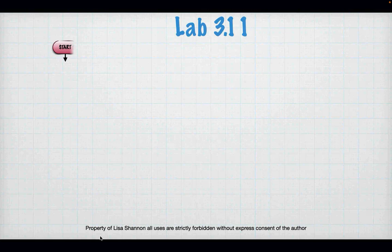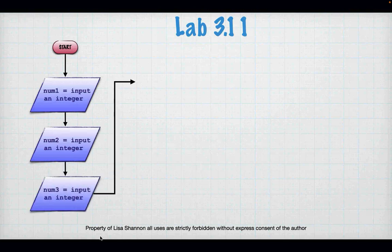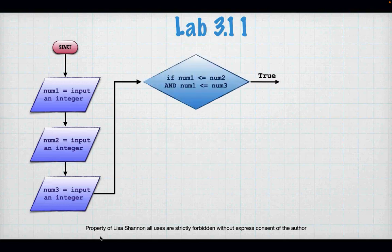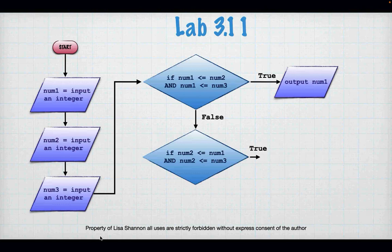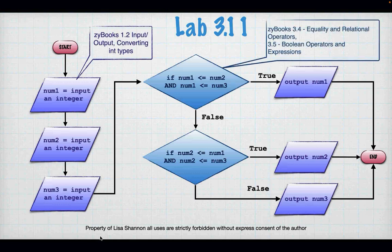If num1 is less than num2 AND num1 is less than or equal to num3, then num1 has to be the smallest number. If that is false, another question: is num2 less than num1 AND is num2 less than or equal to num3? If so, num2 is the smallest. Otherwise it's num3.